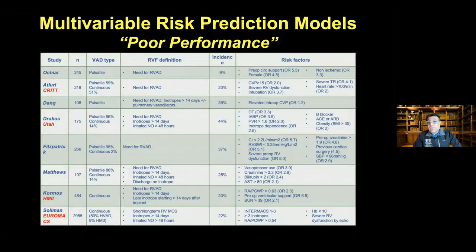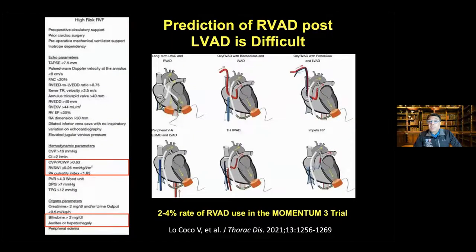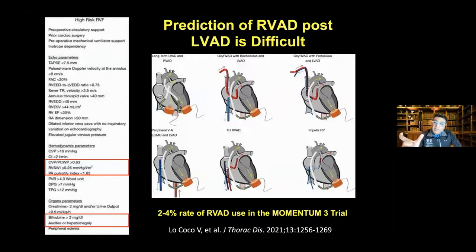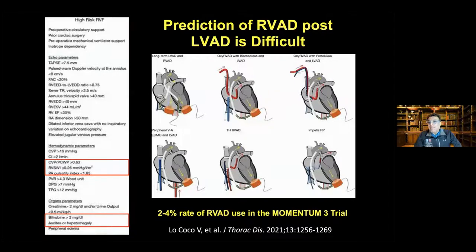Most of us see the need for temporary RV support, which has many configurations. Some have suggested that minimally invasive implantation technique — by not doing a central sternotomy — may provide some benefit, but frankly, it's not entirely clear whether that represents patient selection rather than true benefit.